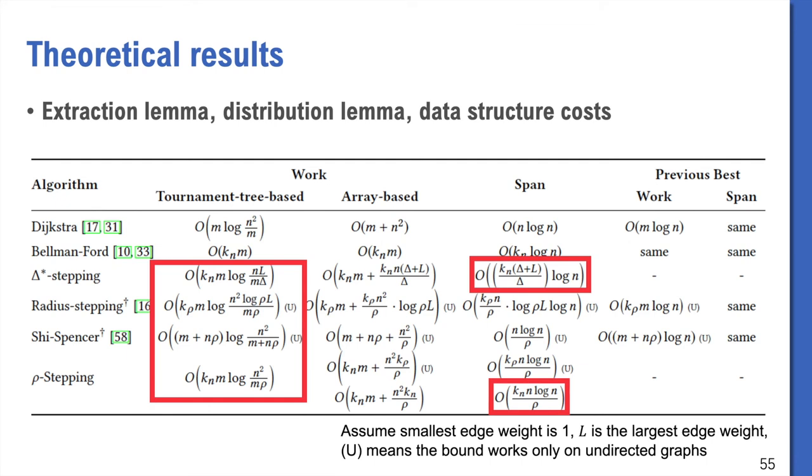By using the concept of k-rho graph, we can show a variety of improved bounds marked in the red boxes. I would like to mention, due to the similarities of the stepping algorithms, the analyses of all these algorithms are pretty similar. They share the same lemmas. We also analyze the costs using array-based LabPQ since we use them in our implementations. Although our goal is not to beat the bounds of tournament tree, many of these bounds are still non-trivial.